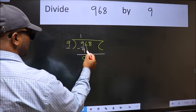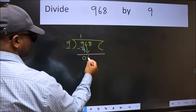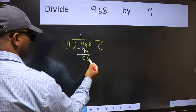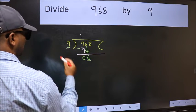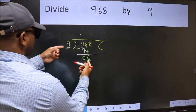After this, bring down the beside number. So 6 down. Now here we have 6 and here 9. 6 is smaller than 9.